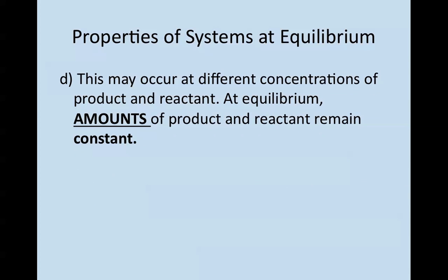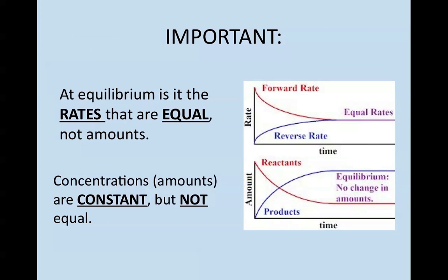Now, this may occur at different concentrations of product and reactant. So while rates are equal, the amounts of product and reactant are simply constant, but not necessarily equal to each other. So this is a huge, important concept here. Put a big star or highlight this. At equilibrium is the rates that are equal, not the amounts. And at equilibrium, the concentrations or amounts are constant, but not necessarily equal. So rates are equal, concentrations are constant.